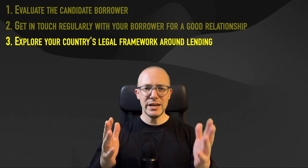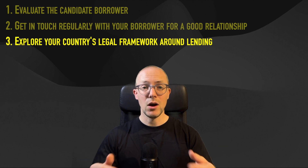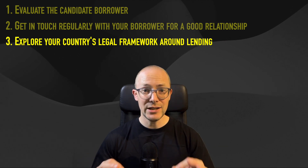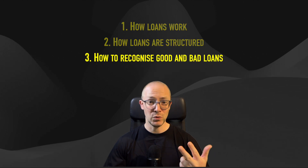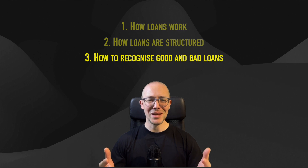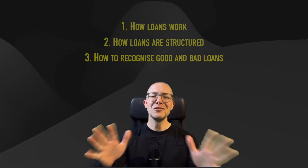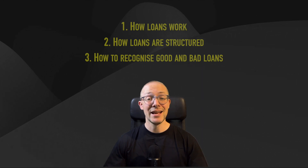To wrap up, these three elements help you determine and manage the risk associated with loans: doing your due diligence with the borrower before accepting to give a loan; keeping communication channels open while the loan is running; and making sure you're clear on your rights and duties around loans according to the legal framework in your country. With these three in place, you'll be in a good position to maximize good loans in your portfolio and minimize the bad ones. Check out the next video in the series where I explain three ways you can become a lender. Thanks for watching!